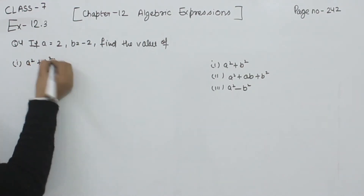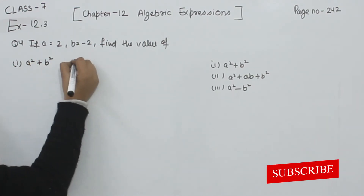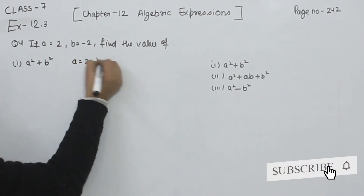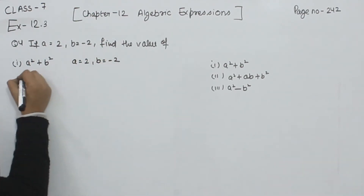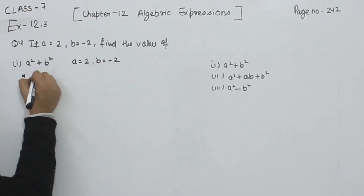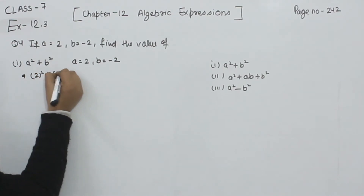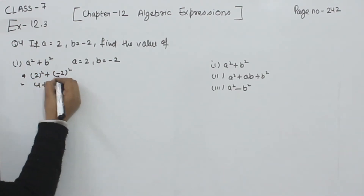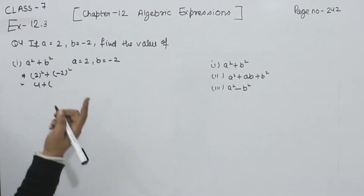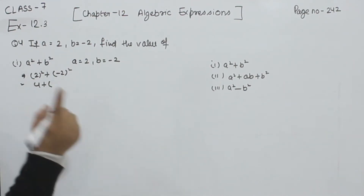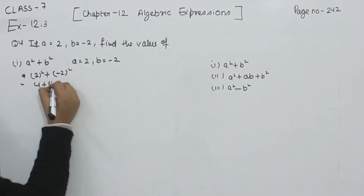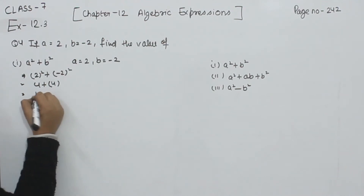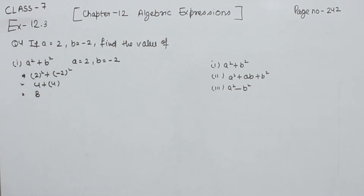Part 1: A square plus B square. The value of A is 2 and the value of B is minus 2. So, 2 square plus minus 2 square equals 4 plus 4, since minus times minus gives plus. The solution for part 1 is 8.